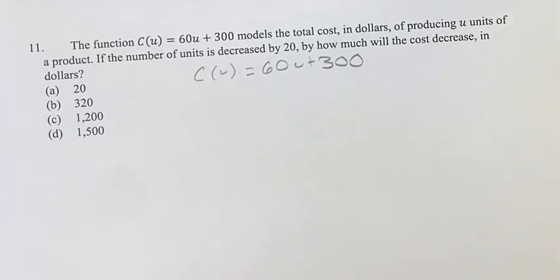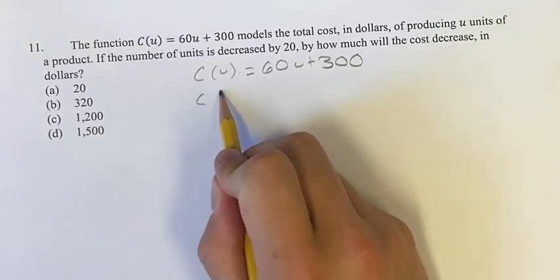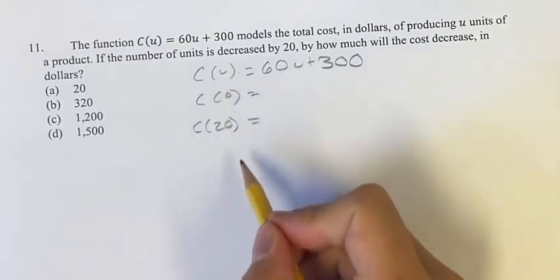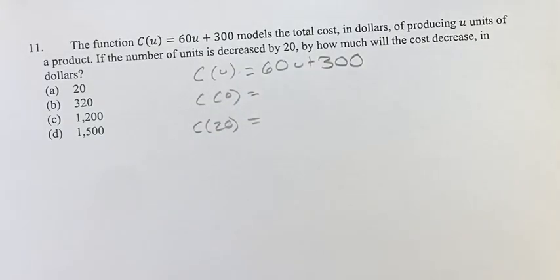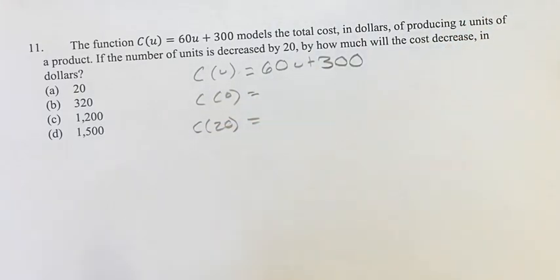If you don't notice it, that's completely fine. What we're going to do here is plug in C(0) and C(20). We're going to see how that changes the value of C. Because in this situation, we'd be decreasing from 20 to 0. The numbers aren't going to be too difficult, and we can just find the difference, which is going to be our answer.